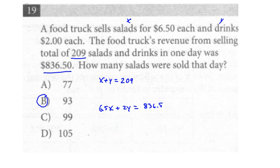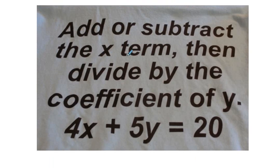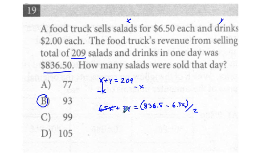If we go to the technique of putting this directly into the calculator without even having to write down what I've just written down, it's this principle here. Many of you know that one of my aliases is the rapper G-Dog, and here we have my student Braden with his G-Dog shirt. What's on the back of the shirt: add or subtract the x term and then divide by the coefficient of y. That's precisely what we're doing here — we subtract the x term, so that's how we get y equals 209 minus x. On the right side, we subtract the 6.5x and divide by the coefficient of y, which is 2, canceling out the 2.